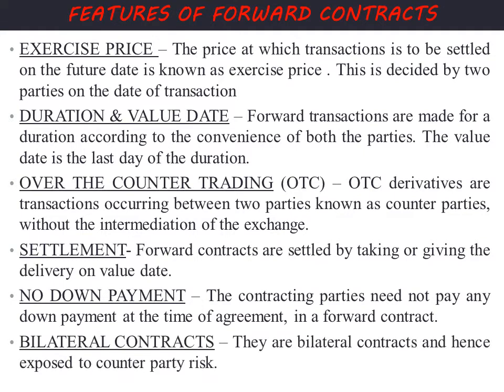Next is bilateral contracts. Forward contracts are bilateral contracts and hence exposed to counterparty risk. There are two parties involved — the buyer and the seller. Since there is no control by stock exchanges or other authorities, if either party defaults on payment or delivery, there is a counterparty risk.